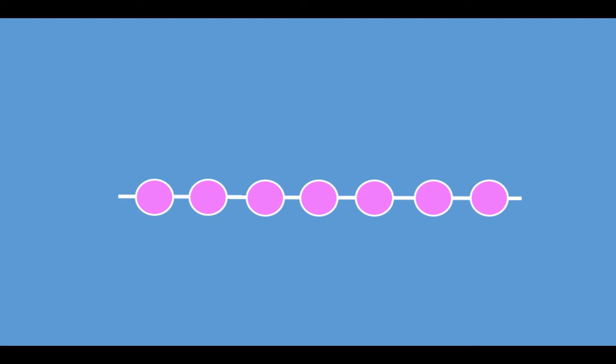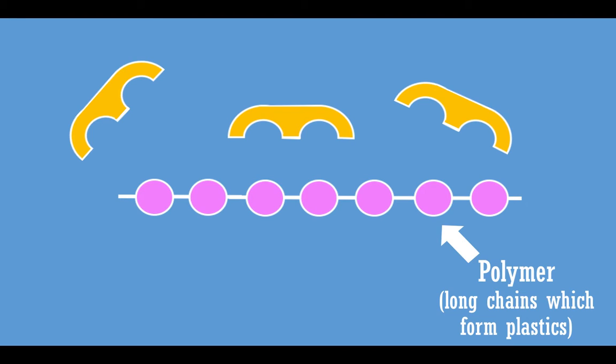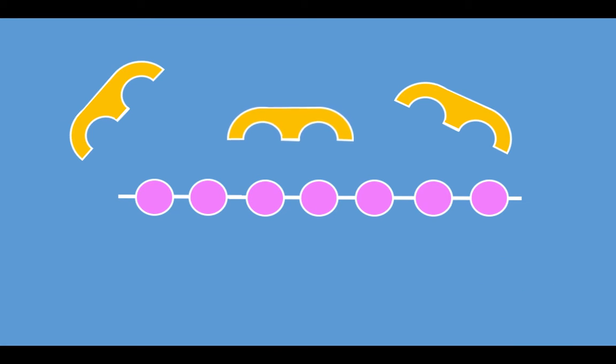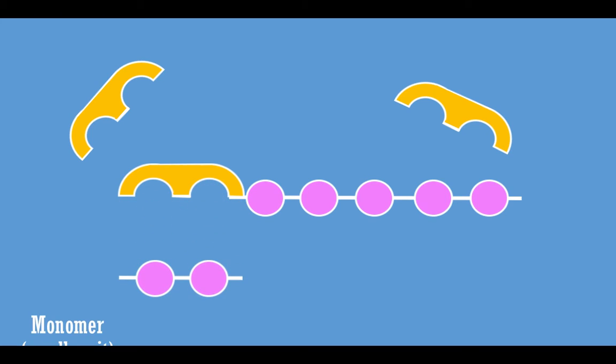Enzymes for degradation function as biological scissors by cutting the plastic polymers. Many single molecule units join together to monomers, single molecules. This is known as hydrolysis.